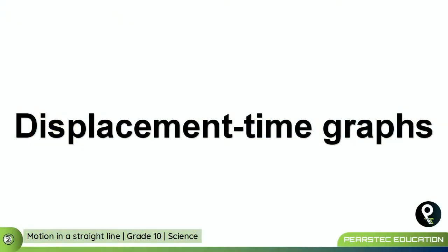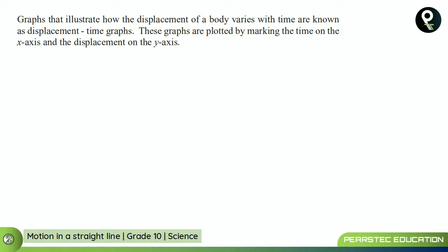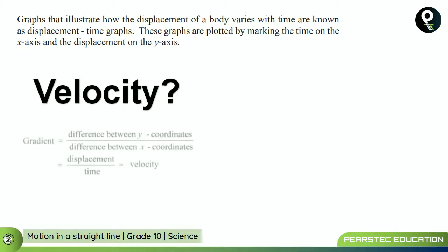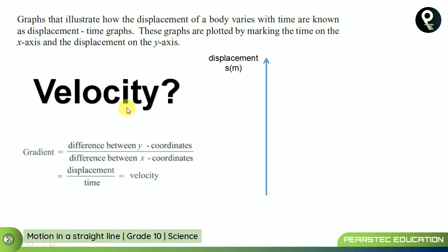Displacement-time graphs illustrate how the displacement of a body varies with time. These graphs are plotted by marking the time on the x-axis. The time is on the x-axis, always remember. On the y-axis you can see the displacement. This is y and this is x. You can find out the velocity from this displacement-time graph.